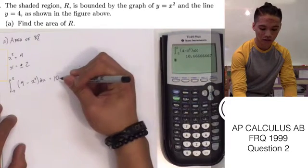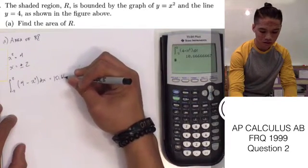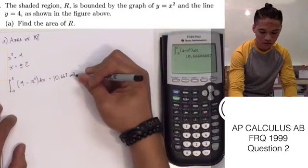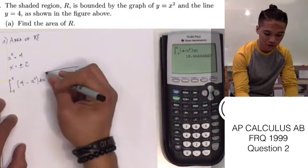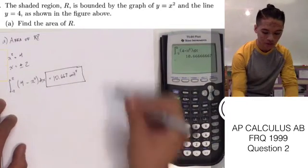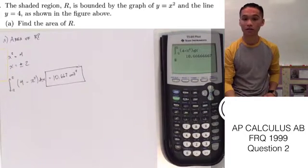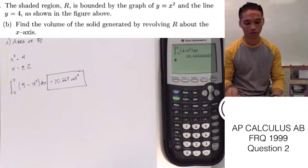And we have 10.667 units squared, since this is our area of R. That's how we answer part A of this question. Let's go ahead and move on to part B.